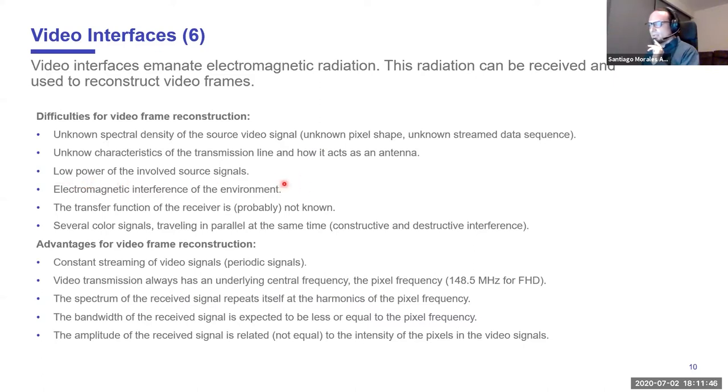The signals involved in this process are very low power. As I told you, the peak voltage for a white pixel is 0.7 volts, and with the impedance in the system we're in the range of milliwatts. We have electromagnetic interference from the environment, and we also have a transfer function that we normally don't know at the receiver. We have three channels that are transmitting, each one with different data information, and this probably goes to constructive or destructive interference.